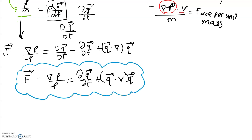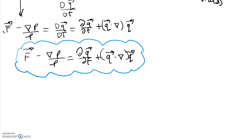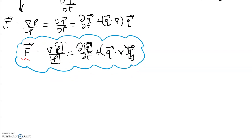Given f, how many variables do we have? We have the pressure, which we don't know; the density, which could depend on position and time; and the velocity of the fluid, which we don't know. The velocity acts in all three coordinate directions x, y, and z in Cartesian coordinates, giving us an extra three components. So in total we have five variables in this vector equation.